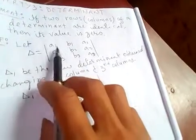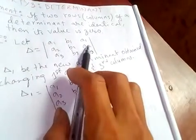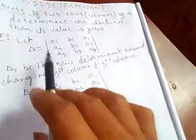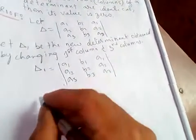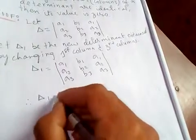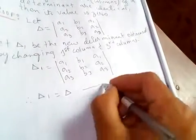Here, since the first column and the third column are identical, if you interchange them it will be the same thing. From this we can say that delta one equals delta. Let's say this is equation one.